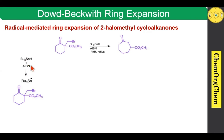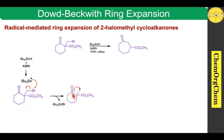Initially, when you use tributyltin hydride and AIBN, which produces tributyltin radical, which readily abstracts the bromine atom, which produces this carbon-centered radical along with tributyltin bromide as a byproduct. This carbon-centered radical readily attacks the carbonyl carbon, then followed by the pi-bond being cleaved homolytically, which produces a new oxygen-centered radical. Here you see this three-membered ring system.